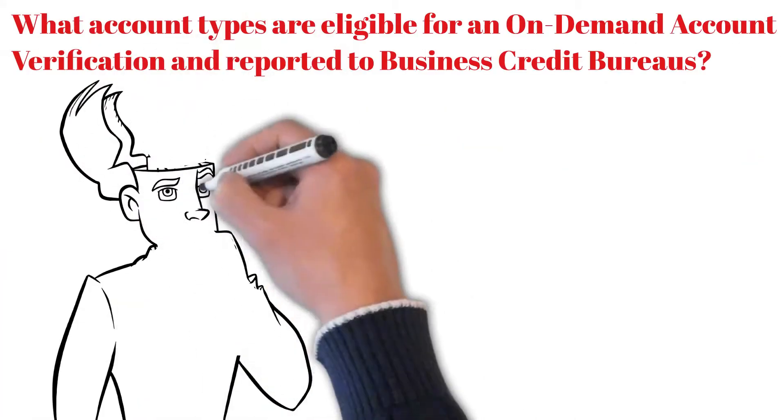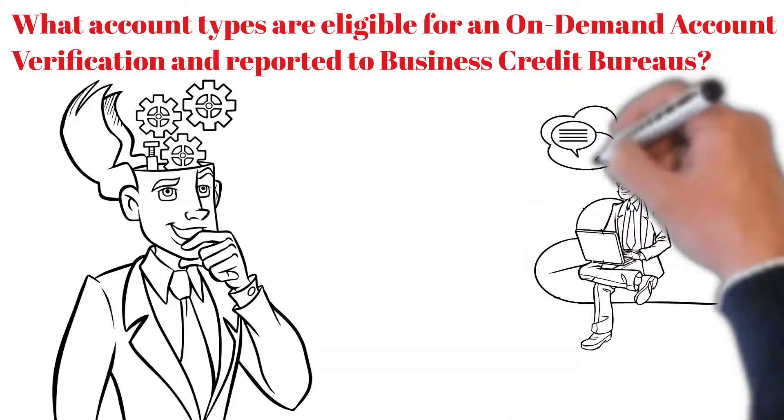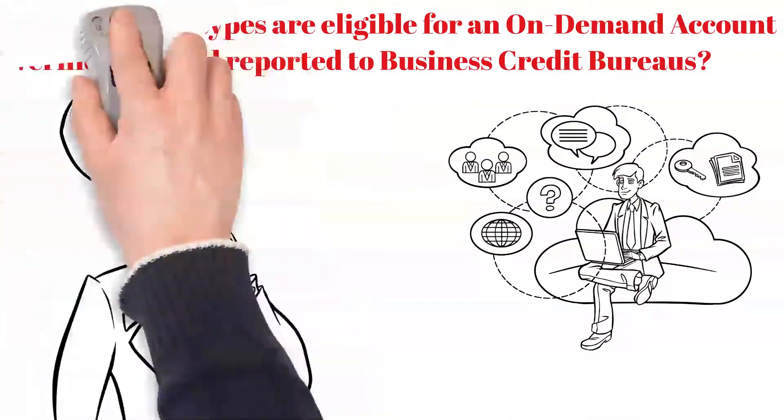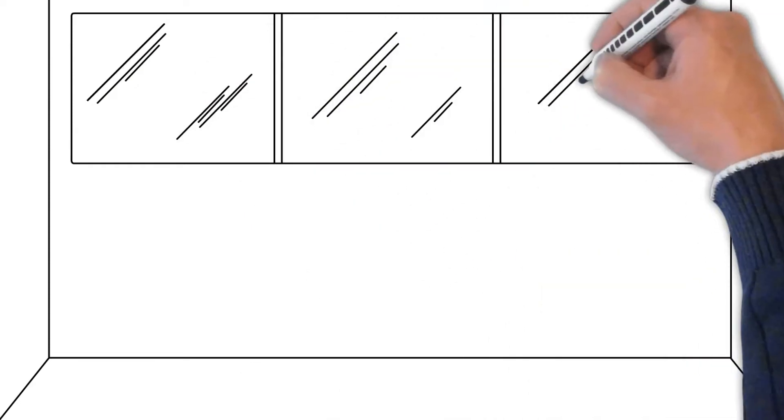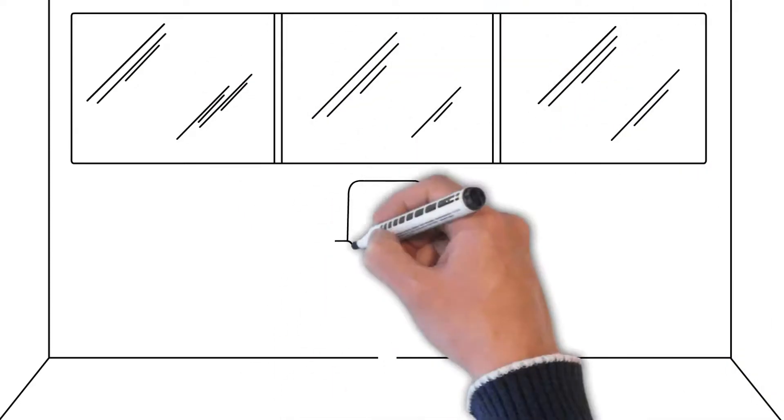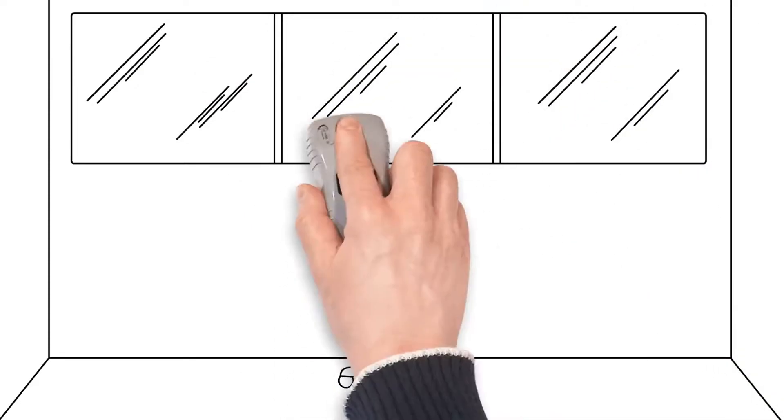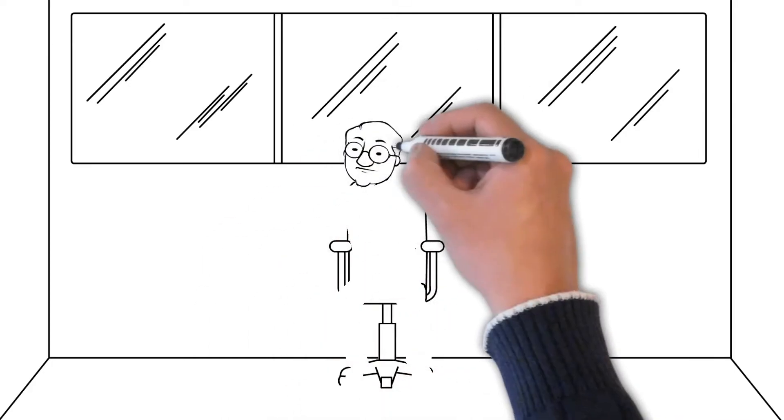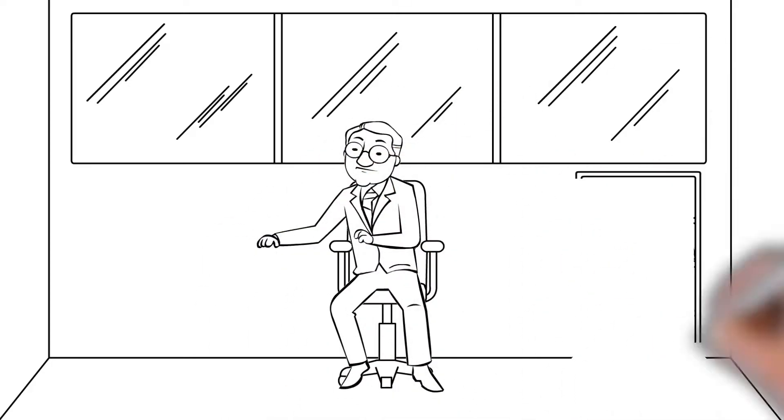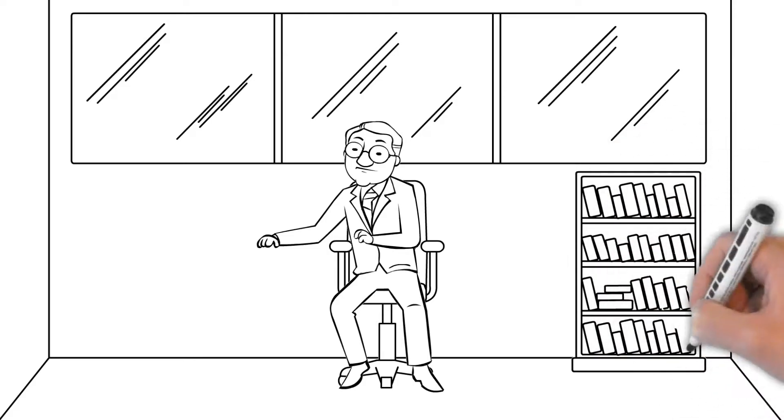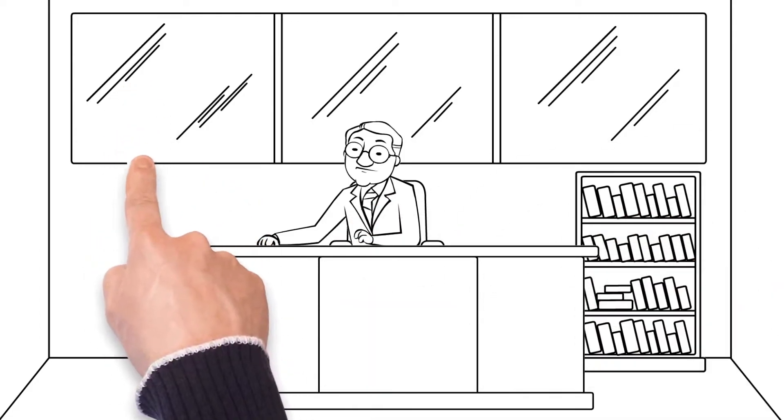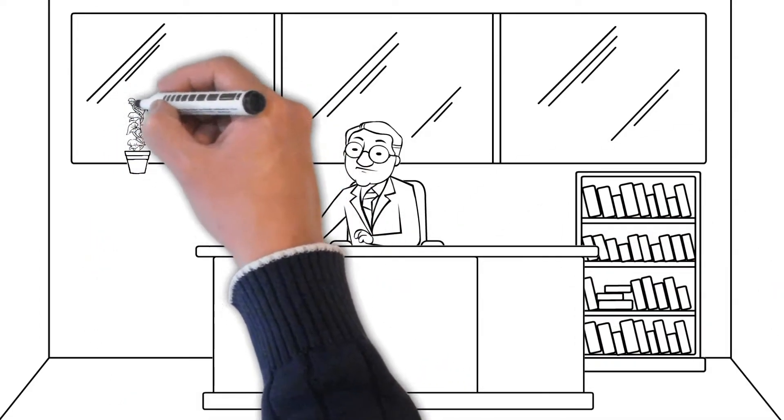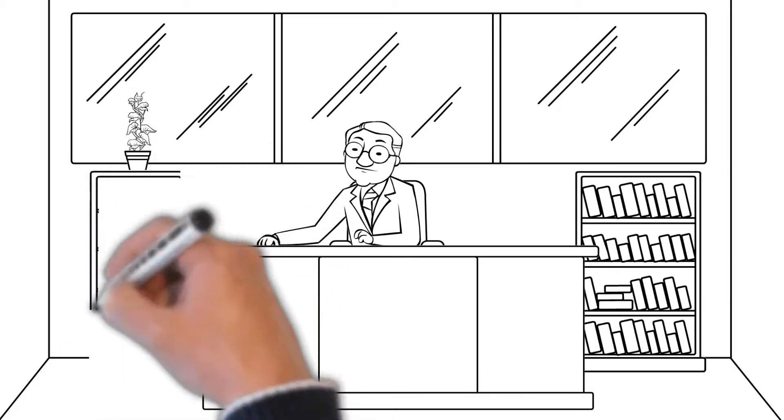What account types are eligible for on-demand account verification and reporting to the business credit bureaus? To be considered for an eligible business account, payments must be made monthly or no less than quarterly for business expenses. Now service providers must be recognized as a legitimate business entity. Now eCredible does reserve the right to determine the eligibility of any service provider. If a provider is accepted, the payment information it provides can include up to 24 months of payment history which can include prompt, slow, or late payments.